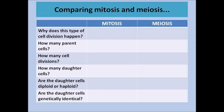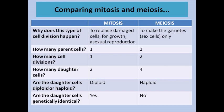Comparing mitosis and meiosis: mitosis happens to replace damaged cells, for growth, and for asexual reproduction. There is one parent cell, one cell division, and two diploid daughter cells that are genetically identical to each other. In meiosis, it is just to make the sex cells — sperm and egg. There is one parent cell but two cell divisions, producing four haploid daughter cells — either sperm or egg — each containing just one copy of every chromosome. Those daughter cells are also not genetically identical, because meiosis allows for variation.